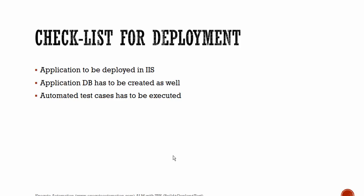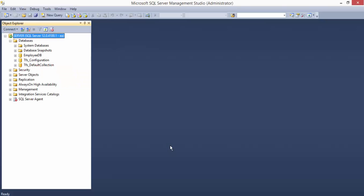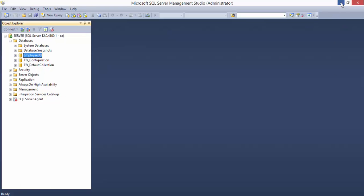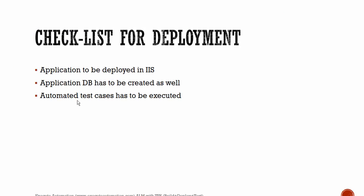Before starting to deploy our application and test framework and creating a continuous integration setup, we need a deployment checklist. First, we need to deploy our application to an Internet Information Server (IIS). Once we build the source code, we deploy it to IIS. We also need to deploy the database associated with our application — the Employee DB in SQL Server — which contains the tables required for the application. Finally, we need to execute the test cases from our test project.